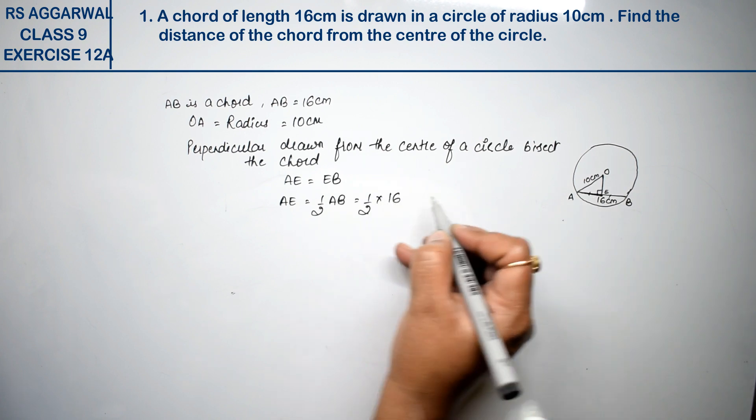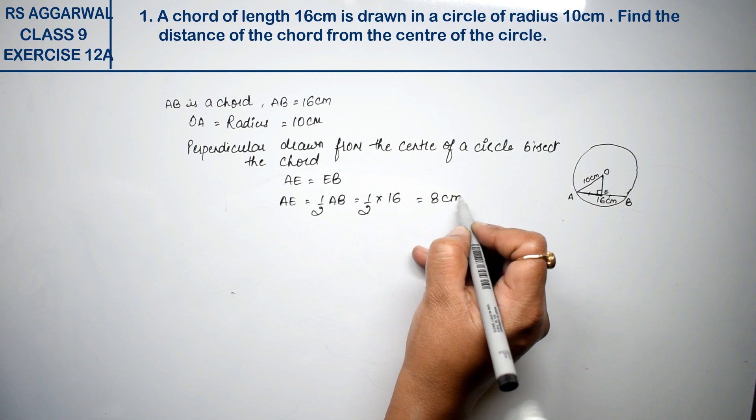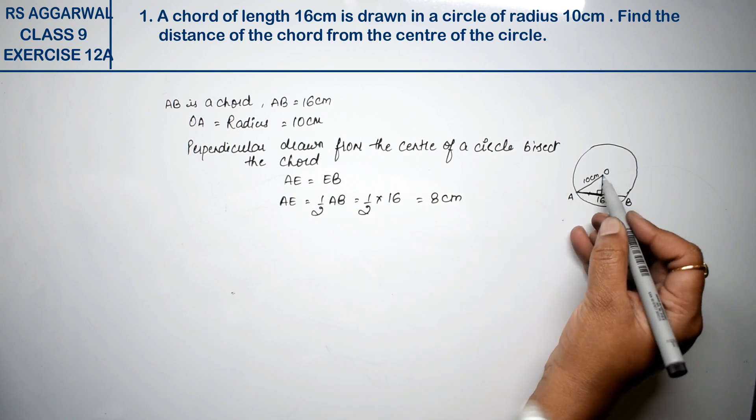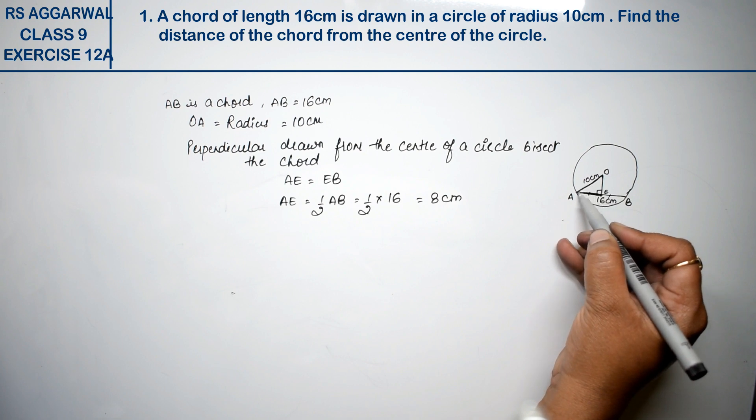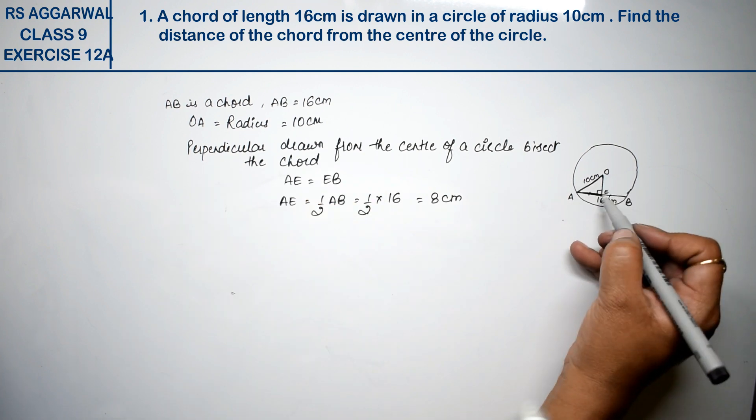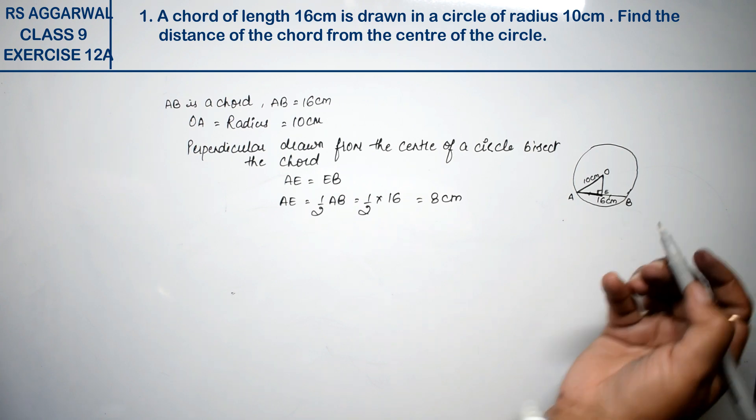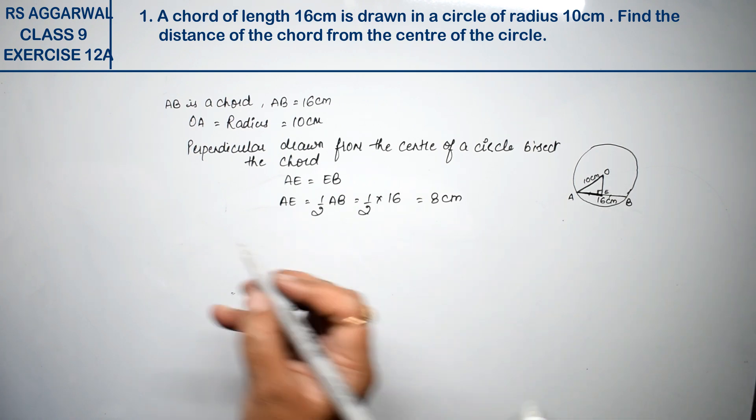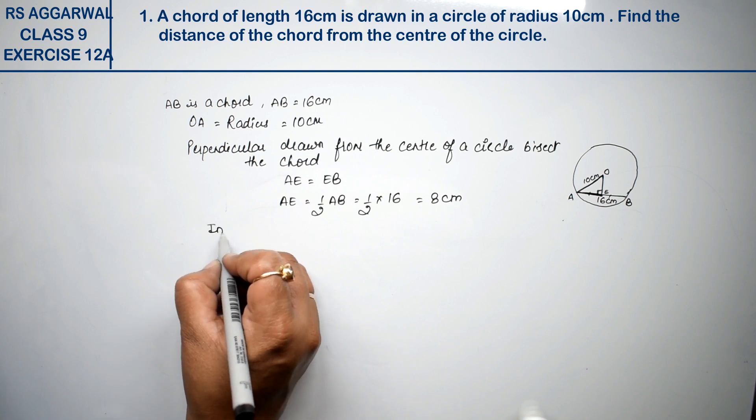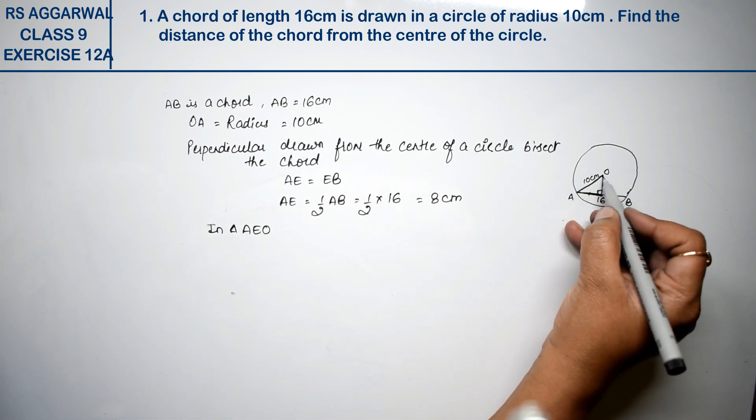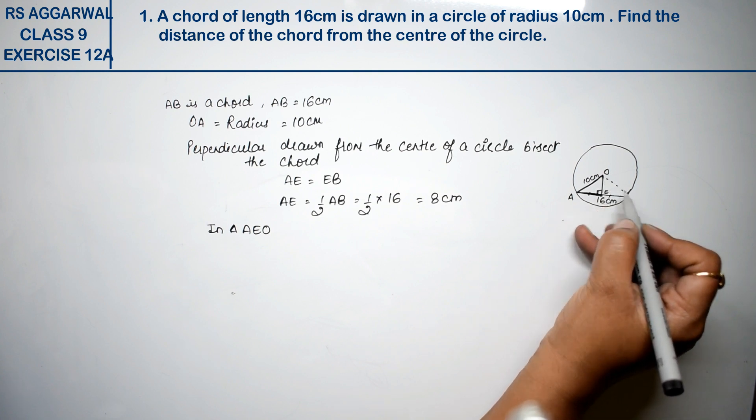Half of 16 is 8 centimeters. Now we have 8 centimeters and we have 10 centimeters. We said that the perpendicular is a 90 degree angle, so we can apply Pythagoras theorem to this triangle.